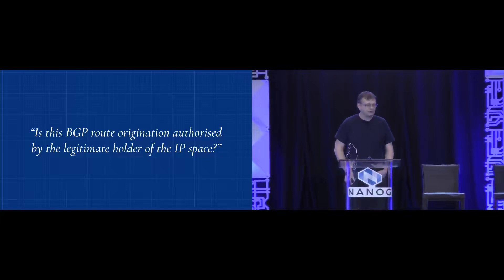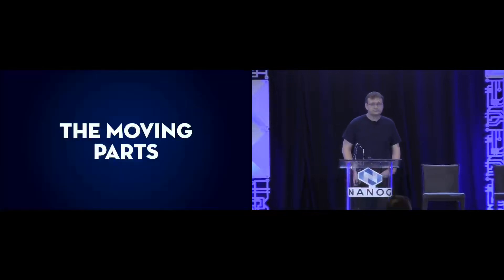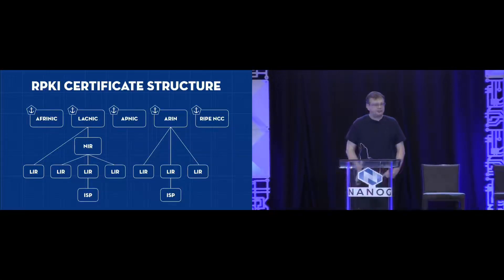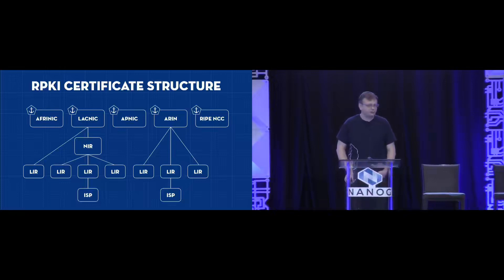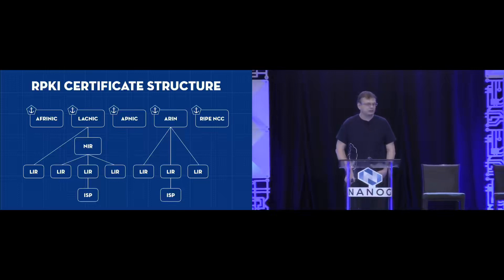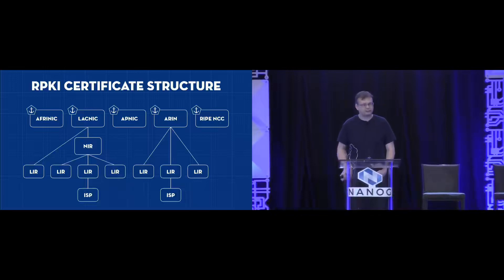How does it work in practice? RPKI is a public infrastructure with certificates that follow the path that resource assignments take when they come to you. It all starts with the RIRs — there are five of them — which serve as trust anchors for the entire structure. This means that whenever you validate a certain announcement or ROA, you have to follow it all the way up to one of these trust anchors.